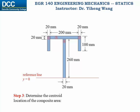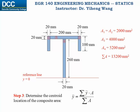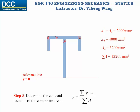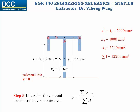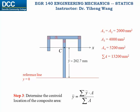Then step three: determine the centroid location of the composite area using the formula we learned before. You need to know the area of each component area as well as the total area. You also need to know y-tilde, the location of the centroids for each component area. Since they are all rectangles, the individual centroid location shouldn't be difficult to find. Just make sure y-tilde are all expressed with respect to the same reference line. Plugging the information into the equation gives y-bar, which is 202.7 millimeters — the centroid location for the composite area.